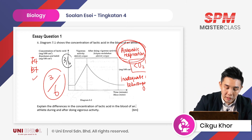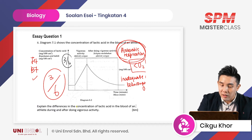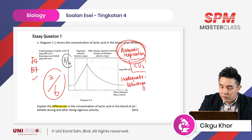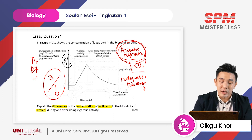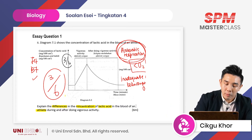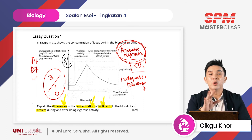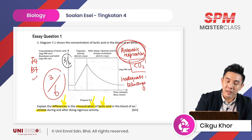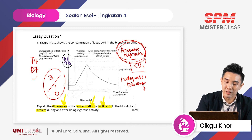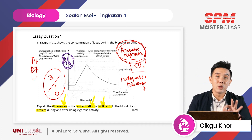First of all, what I want you to do is use a highlighter. Highlight the keywords — kata kunci. They are: differences, concentration, lactic acid, and blood. This is the keyword. What are they asking for? They want the differences in terms of the concentration of lactic acid. Good news — all you have to do is get the three points from the graph.